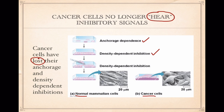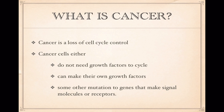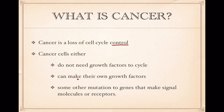For some reason, they have lost the ability to respond to a control signal. Cancer is actually a disease of the cell cycle, and specifically, it's a problem with the control of cell cycles. Cancer cells either don't need growth factors anymore — they can make their own growth factors — or some other mutation has taken place in the genes that make signal molecules and/or receptors.